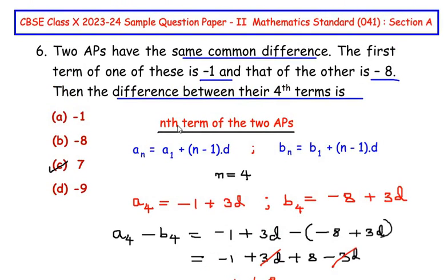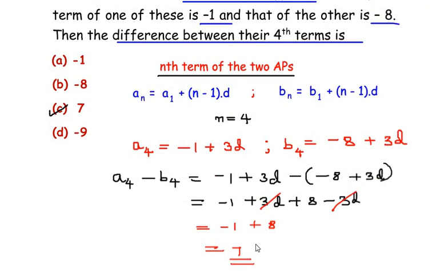So to solve this we have made use of the nth term of the AP formula and finding the difference we see that the difference leads to the answer 7.